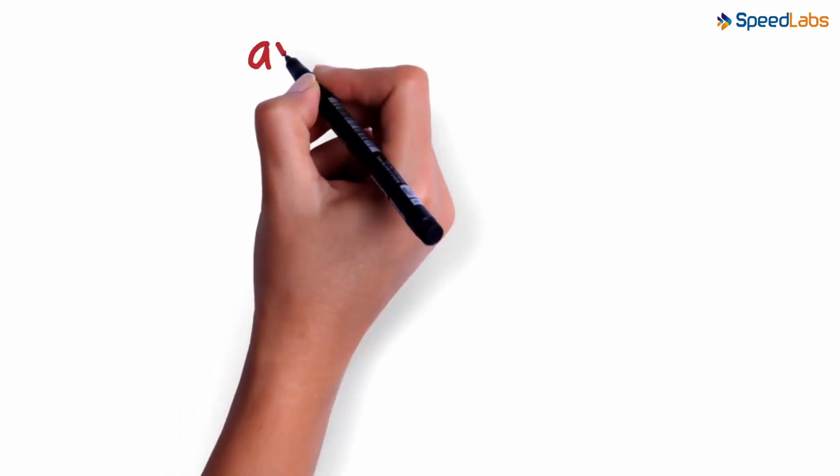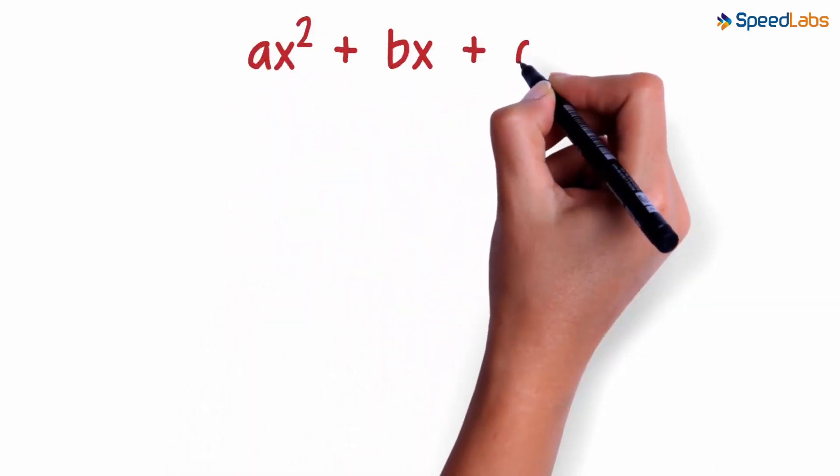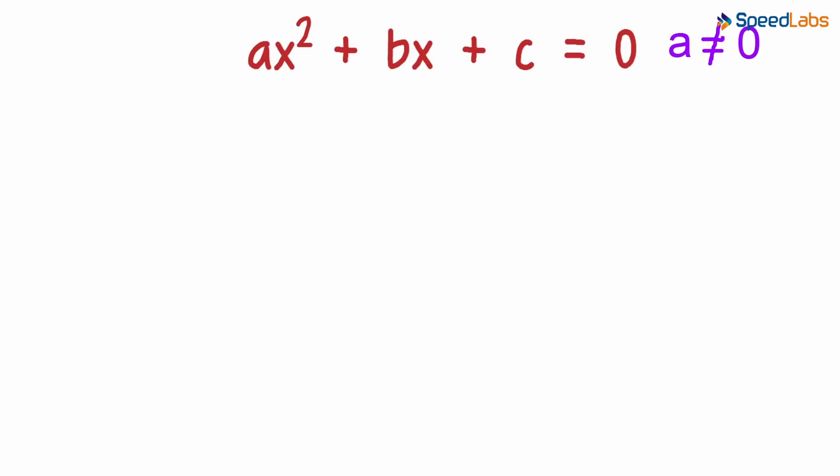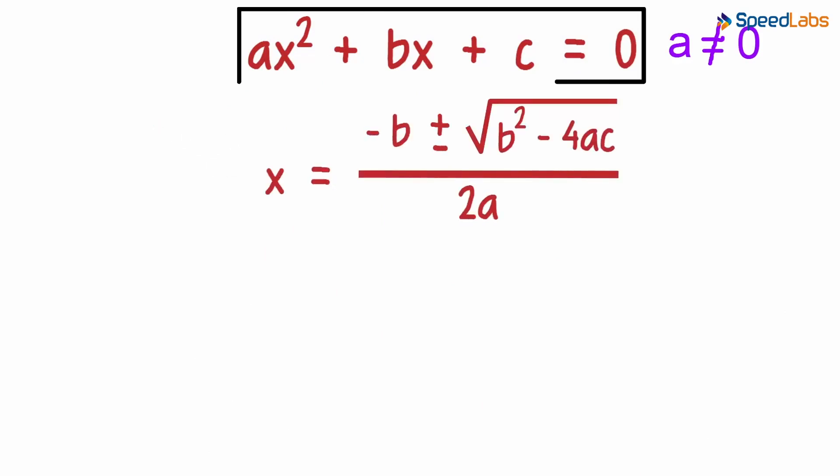For the quadratic equation ax squared plus bx plus c equals zero, the roots are given by this formula. What are the two roots of this equation then?